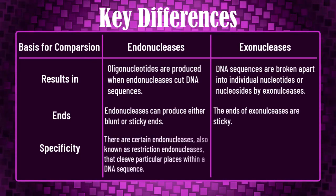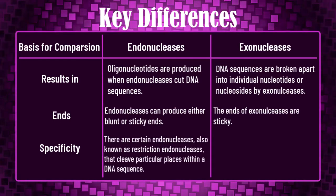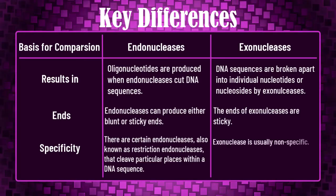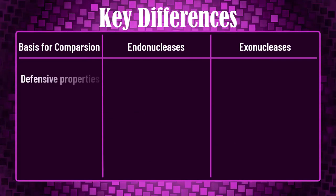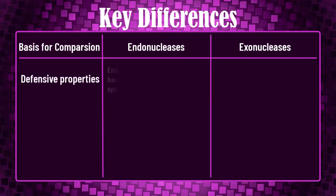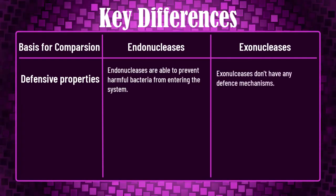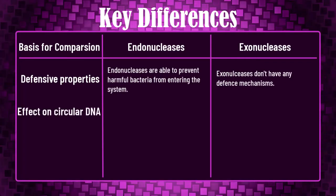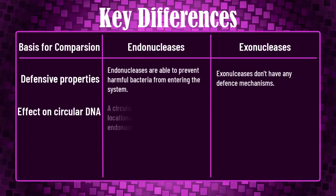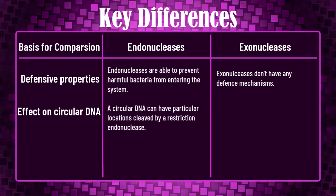Regarding specificity: there are certain endonucleases, also known as restriction endonucleases, that cleave particular places within a DNA sequence; whereas exonucleases are usually non-specific. Regarding defensive properties: endonucleases are able to prevent harmful bacteria from entering the system, whereas exonucleases do not have any defense mechanisms.